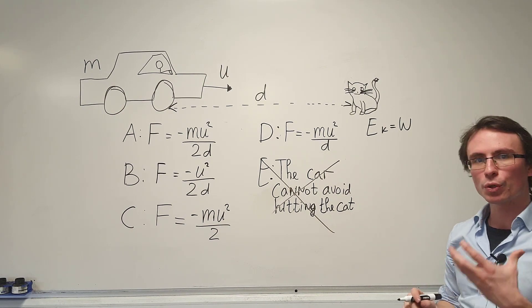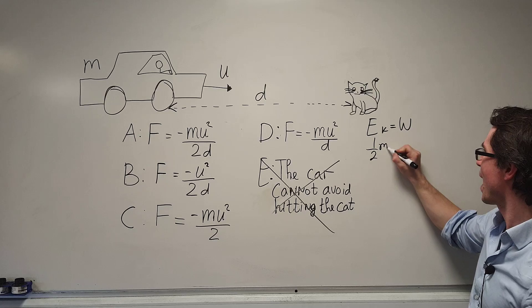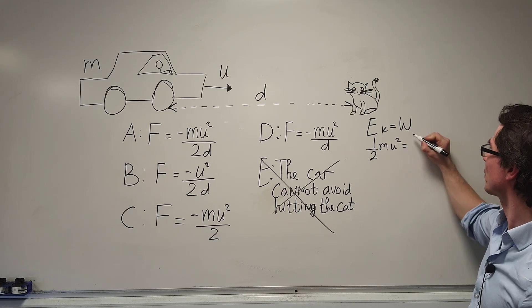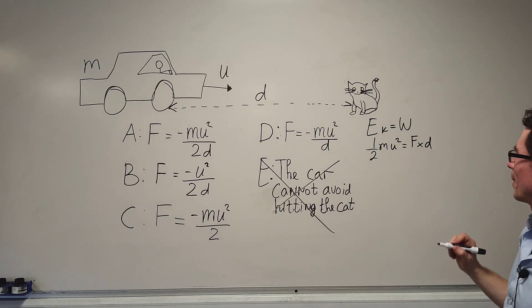In this case, the work done will just be force times distance, so we can just say that the half mu squared will be equal to the force multiplied by the distance.